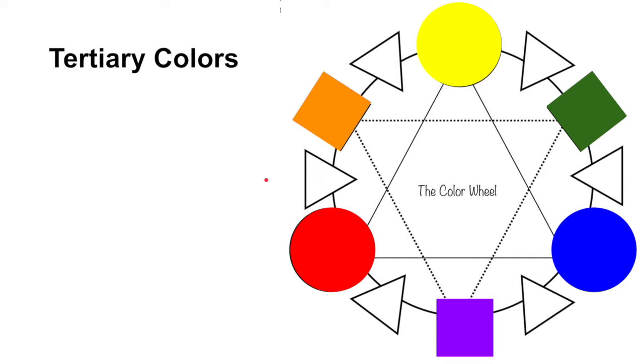Next up we have our tertiary colors. And tertiary colors are also known as intermediate colors, but I like to say tertiary because it lines up with the number three. So primary is one, secondary is two, tertiary is three.